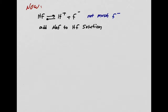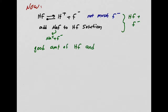So what I'm going to do is add NaF to the HF solution. Sodium fluoride is Na+ and F-, so now I have the conjugate, and I have a weak acid. This is a buffer pair, because we have a good amount of each one — a good amount of HF and F-. If you have a good amount of HF and F-, then we have a good buffer solution.